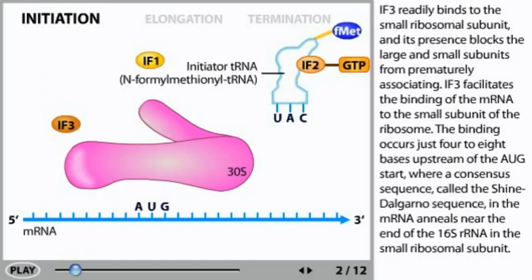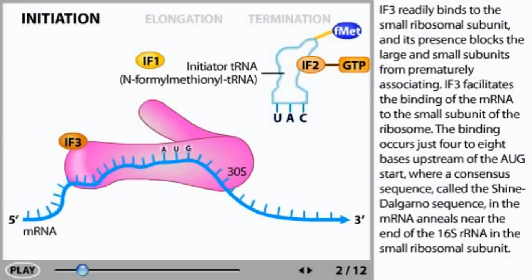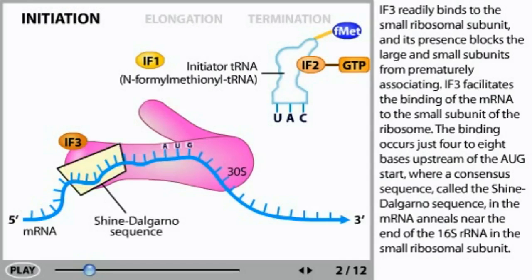IF3 readily binds to the small ribosomal subunit, and its presence blocks the large and small subunits from prematurely associating. IF3 facilitates the binding of the mRNA to the small subunit of the ribosome. The binding occurs just four to eight bases upstream of the AUG start, where a consensus sequence called the Shine-Dalgarno sequence in the mRNA anneals near the end of the 16S ribosomal RNA in the small ribosomal subunit.